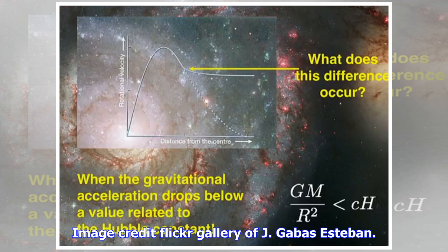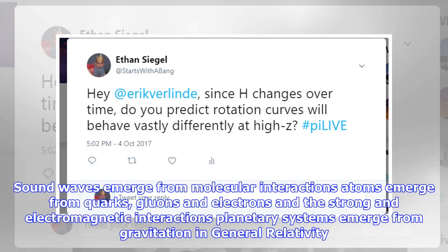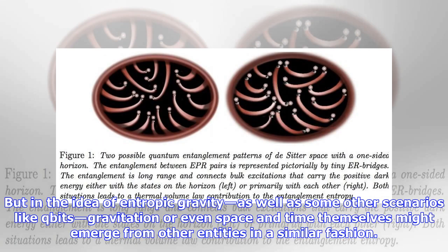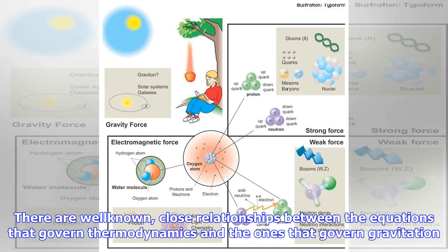Sound waves emerge from molecular interactions. Atoms emerge from quarks, gluons and electrons and the strong and electromagnetic interactions. Planetary systems emerge from gravitation in general relativity. But in the idea of entropic gravity, as well as some other scenarios like qubits, gravitation or even space and time themselves might emerge from other entities in a similar fashion.